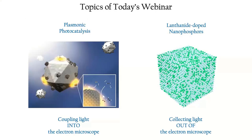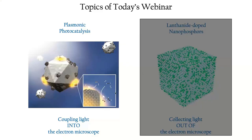Today's presentation will focus on two topics. The first is plasmonic photocatalysis — using light to make and break chemical bonds, which I'll describe in a moment. The second example is work I've been doing at Stanford for the last year or so on lanthanide-doped nanophosphors. But we'll start with, and spend most of our time today on, the plasmonic photocatalysis applications.